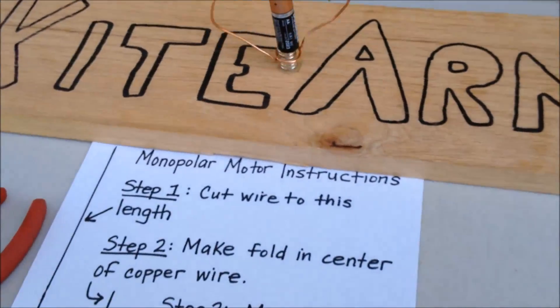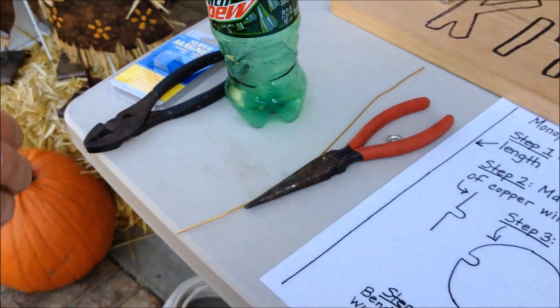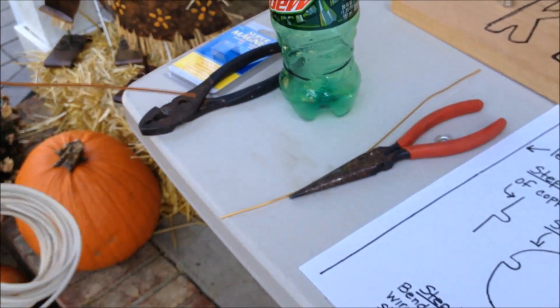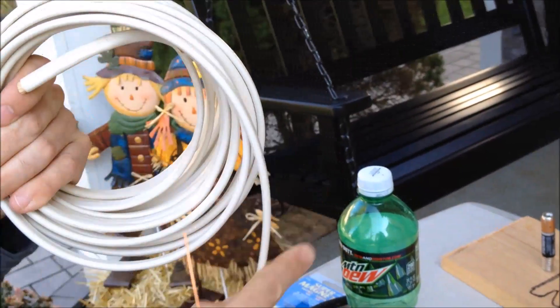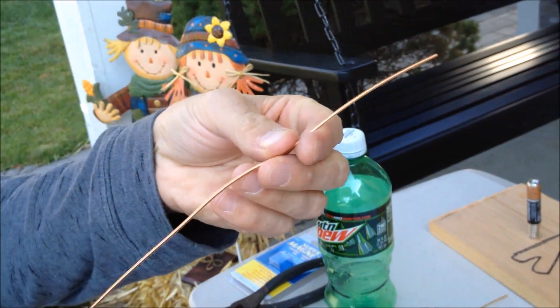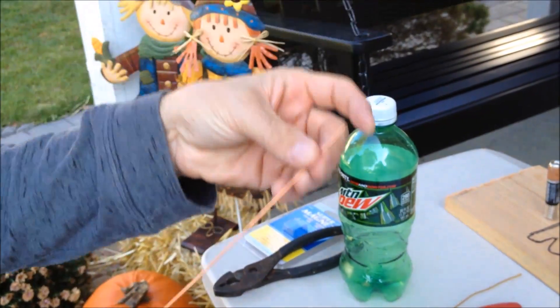Step number one, we're going to cut the length. It's about a foot long of copper and where I got this copper from is a 14 gauge household wire. I just basically stripped off all the casing and on the inside you get this nice piece of copper about a foot long.